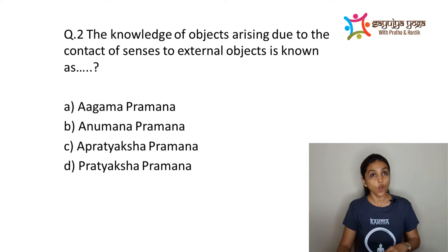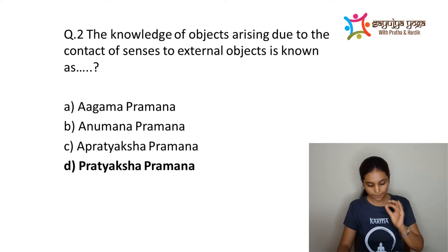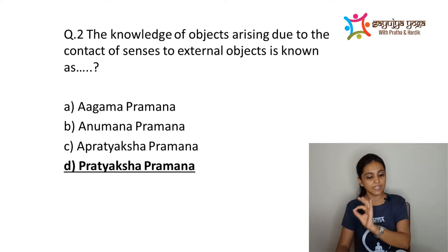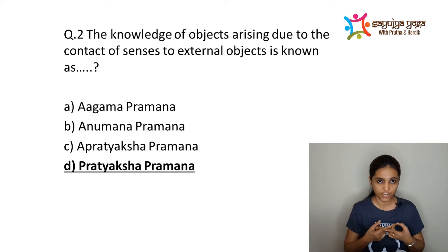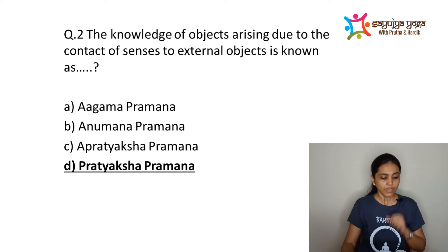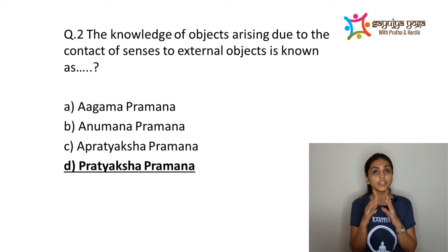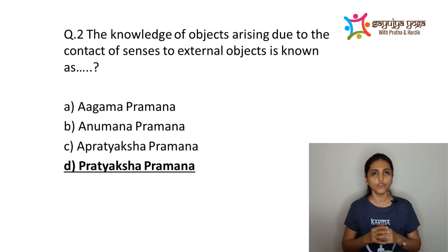The next question: the knowledge of objects arising due to the contact of senses to external objects is known as — options are Agama Pramana, Anumana Pramana, A-Pratyaksha Pramana, or Pratyaksha Pramana. The correct answer is Pratyaksha Pramana. Pratyaksha means Praty plus Aksha — Praty means each, Aksha means eyes — but we must consider all sense organs, not just the eyes. Using sense organs to perceive objects is Pratyaksha Pramana, which gives us Vishesha Gnan.